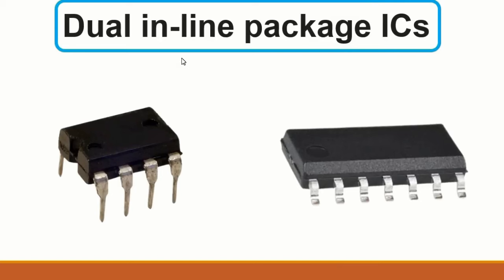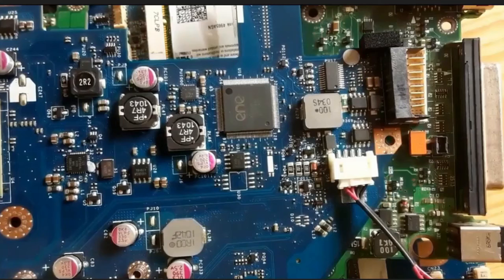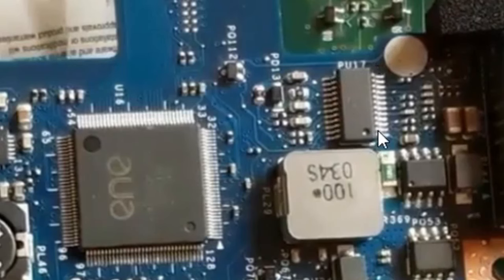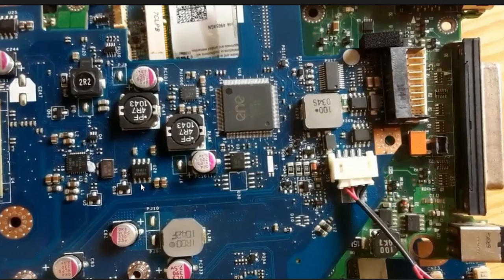Next we have the DIP - dual inline package - ICs. I'm going to teach you many ICs and the differences between them. The DIP IC has pins or terminals on just two sides. On the motherboard, here are examples of DIP ICs.